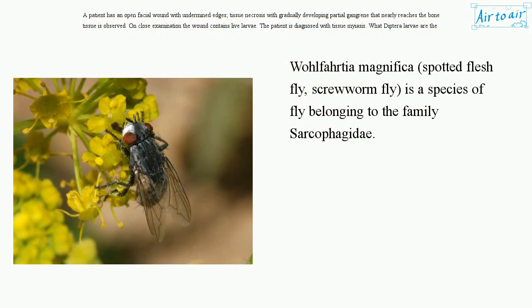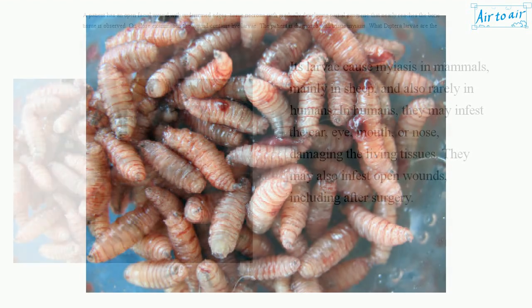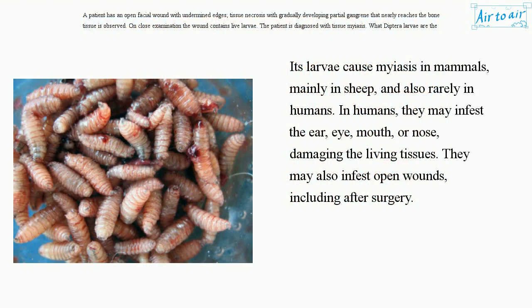Wohlfahrtia magnifica, the spotted flesh fly or screwworm fly, is a species of fly belonging to the family Sarcophagidae. Its larvae cause myiasis in mammals, mainly in sheep, and also rarely in humans. In humans, they may infest the ear, eye, mouth, or nose, damaging the living tissues. They may also infest open wounds, including after surgery.